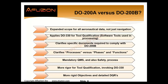DO-200 clarifies which special documents are used to augment DO-200B certification. DO-200B clarifies processes versus phases and functions. It's mandatory that a data processor has a QMS — quality management system — but also a safety process. That safety process is used to assess the assurance level of the data and the DQRs, data quality requirements. There's more rigor in DO-200B for tool qualification, invoking DO-330, and more rigid objectives and data quality requirements.